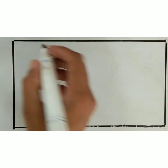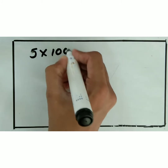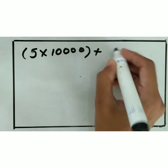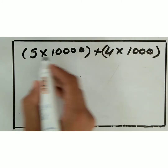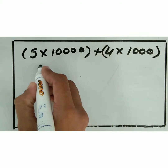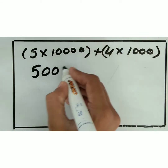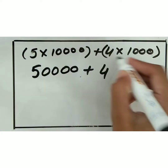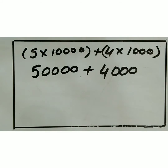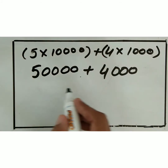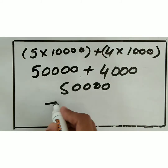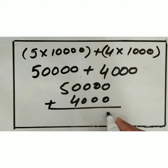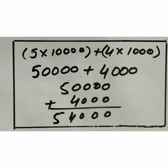On the board: five multiplied by ten thousand — five ones are five, and here we have four zeros. Plus four multiplied by one thousand — four ones are four, and next we have three zeros. Now students, add them. We get the answer: fifty-four thousand.